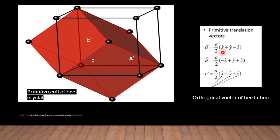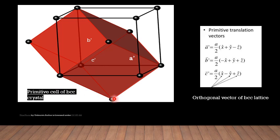So its coordinates are a/2 (x + y − z). Similarly, for the primitive vector b', this atom is lying along the minus x-axis, plus y-axis — because this is in the upward direction with respect to the origin — and along the plus z-axis. And for the vector c', this atom is lying along the plus x-axis but along minus y-axis, because it lies below the origin, so minus y-axis and plus z-axis direction.